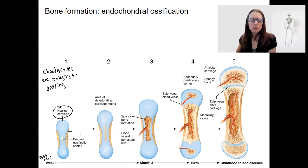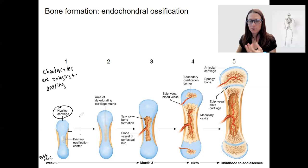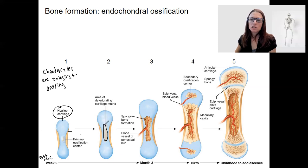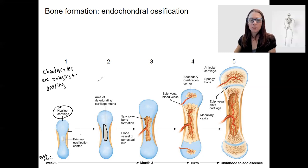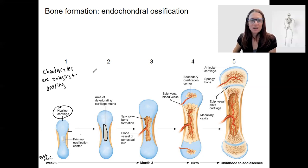As the bone starts to lengthen because of the dividing chondrocytes, the cartilage in the middle — the chondrocytes themselves — start to die. That's because they no longer have nutrients available to them. The cartilage is getting too big for this little bone organ, so chondrocytes start to die in that primary ossification center.